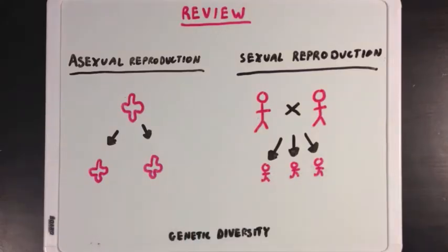In general, we say that organisms that reproduce asexually usually have low genetic diversity, whereas sexually reproducing species have high genetic diversity.